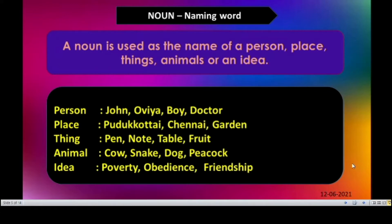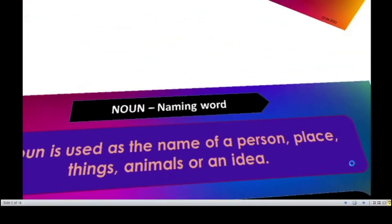Names of places: Kudukotai, Chennai, Gordon, Delhi, Calcutta, and so on. The names of things: pen, pencil, notebook, table, fruit, cell phone, and everything. It can also be used to name animals: cow, snake, dog, peacock — all these are names given for animals. And names given for ideas, for example: poverty, obedience, friendship. So in general, noun is a naming word.